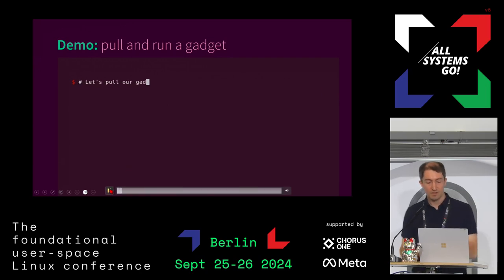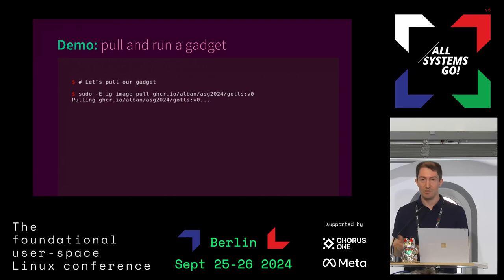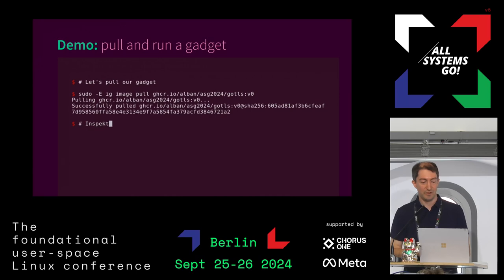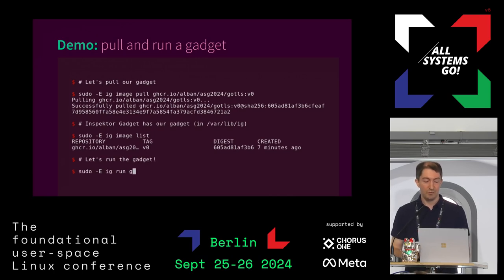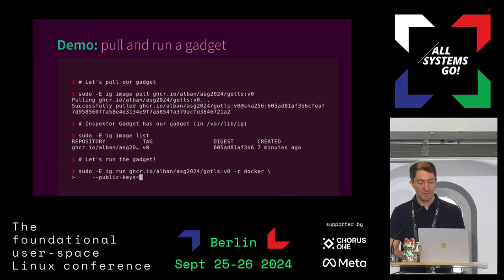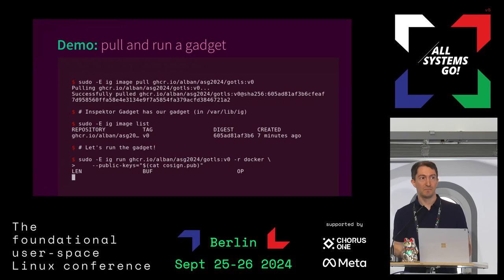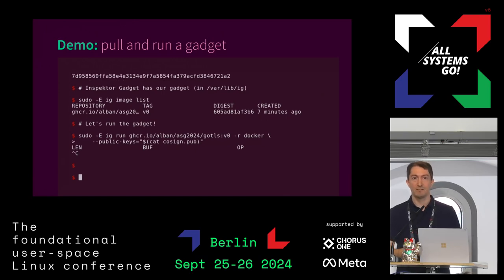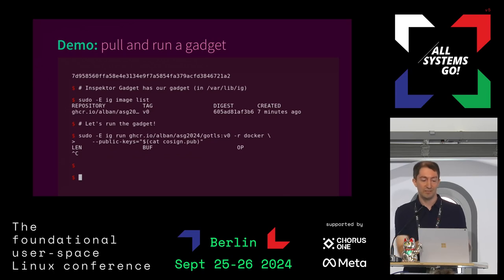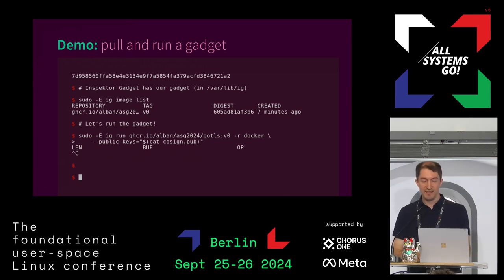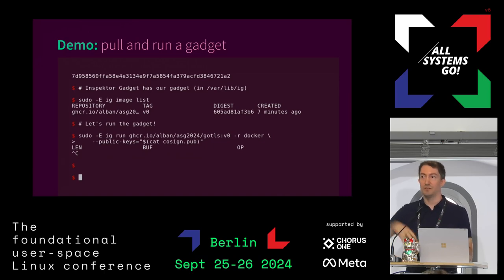Now we've pushed it to the OCI registry and a colleague can pull it and run it. This is done with the IG image pull command — you specify the OCI image of the gadget, and Inspector Gadget knows about it and can run it. We can run it locally with IG run, specifying the name of the gadget. We can optionally check the cryptographic signature by specifying which public key we trust. By default, we trust keys from the Inspector Gadget project for official gadgets. In this example, we get no output from the command because we are running the gadget on the local laptop, but the workload is running on Kubernetes.